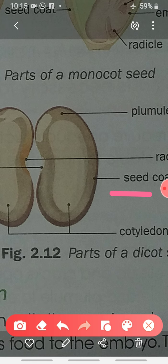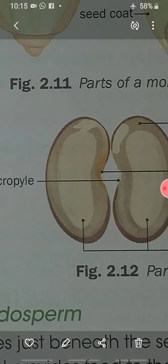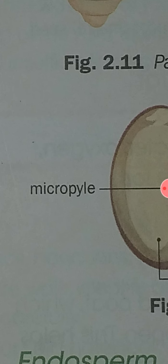Water enters the seed through a small opening called the micropyle. This is the opening through which the seed absorbs water.